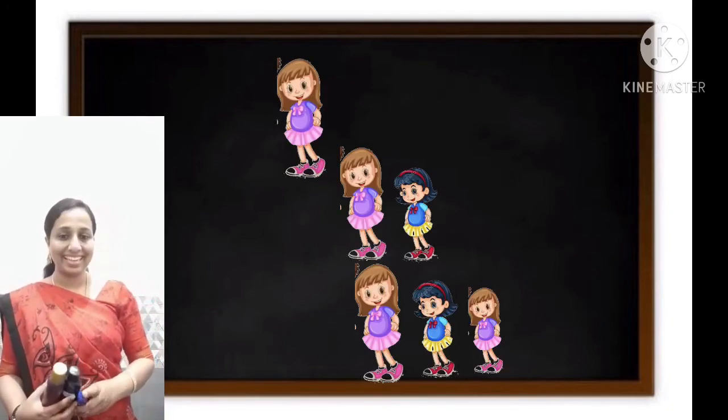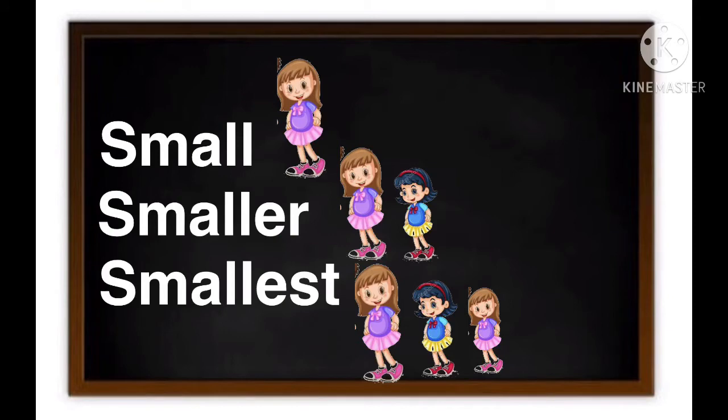Let's see some more examples. Most adjectives form their comparative degree by adding -er and superlative degree by adding -est. Look here: small is an adjective. When it's used in comparative form, we add -er to make smaller. When it's used as superlative degree, we add -est to make smallest.